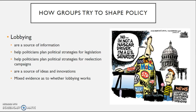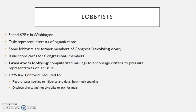Lobbyists also provide new ideas and innovation, though it is mixed as to whether they work or not — a lot of that comes down to the amount of wealth and resources you have. Some have looked at politicians as sort of like a NASCAR driver, more representative of corporations and interest groups than the everyday average person. Lobbyists spend more than $2 billion in Washington, and many are former members of Congress — this is known as the revolving door. Sometimes they issue scorecards for congressional members, such as the NRA giving an F to politicians unsupportive of gun rights and an A to those who are supportive. They also engage in grassroots lobbying through computerized mailings to encourage citizens to pressure representatives on an issue.